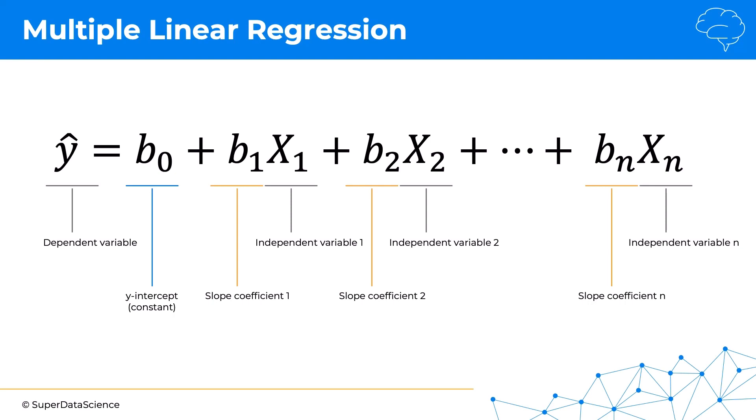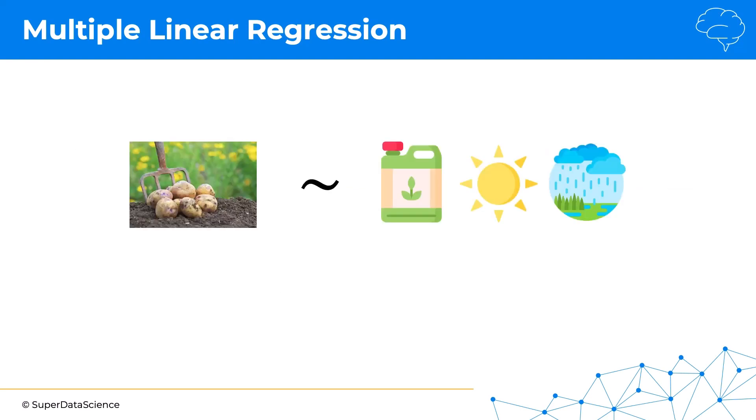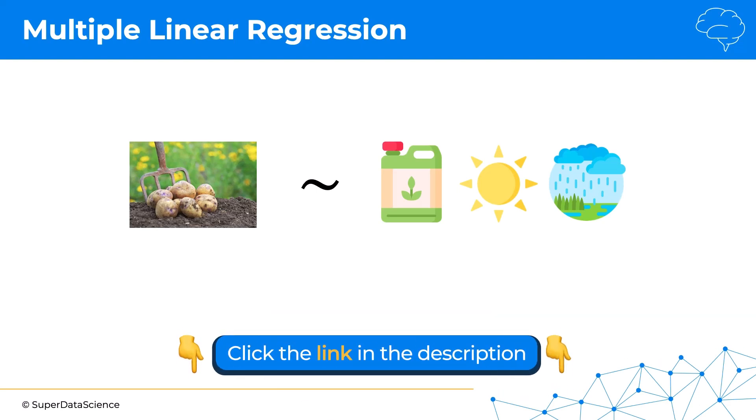Going back to our example of producing potatoes on a farm, we might want to predict how many potatoes we're yielding depending on how many kilograms of nitrogen fertilizer we're using, what the average temperature in the season is, and how many millimeters of rainfall we've seen in the season.